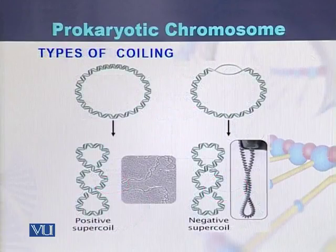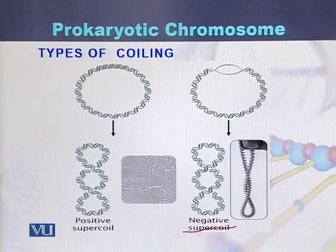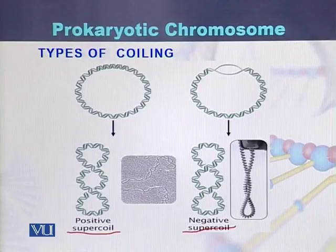Types of coiling. There are two types of coiling: one is called negative coiling while the other one is called positive coiling. Both types of coiling can be seen in the diagrams.